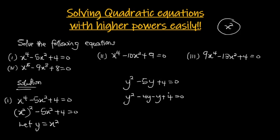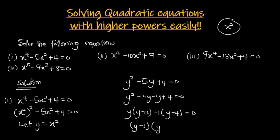Factoring out y from the first two terms gives y(y - 4), and factoring -1 from the last two gives -1(y - 4) = 0. So we get (y - 1)(y - 4) = 0, which means y = 1 or y = 4.